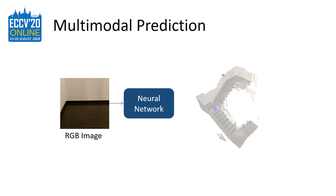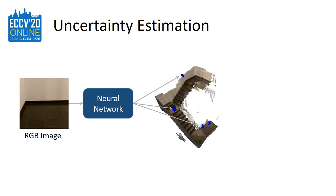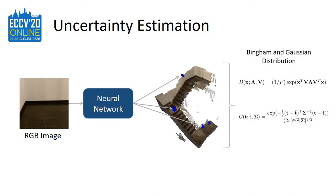Instead of predicting a single pose given an RGB image, our aim is to estimate a set of possible pose hypotheses explaining ambiguous views and the multimodal nature of the problem. For each hypothesis, we aim to predict a measure of uncertainty, indicating how certain our model is in the predicted camera pose. We model the uncertainty using the entropy of a mixture of multivariate Bingham and Gaussian distributions.